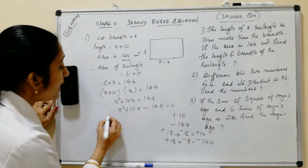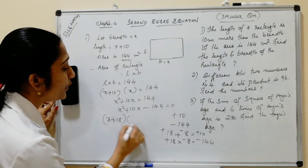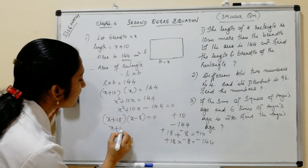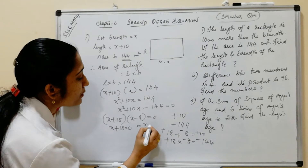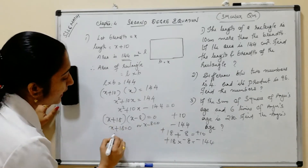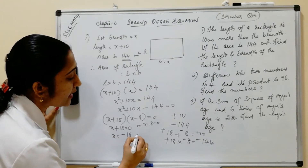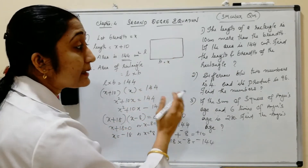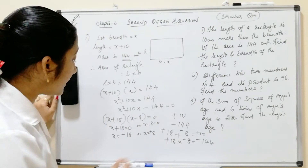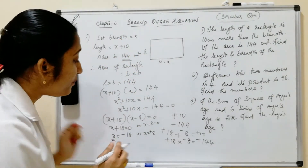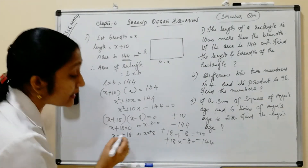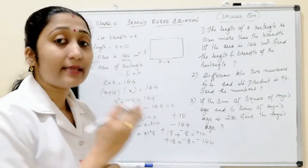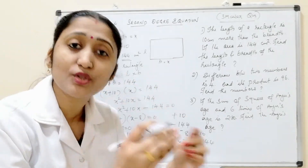So the factors are (x + 18)(x − 8) = 0. That means x + 18 = 0 or x − 8 = 0, giving x = −18 or x = 8. Since x represents the breadth of the rectangle, a negative value is not possible. We choose only the positive value.